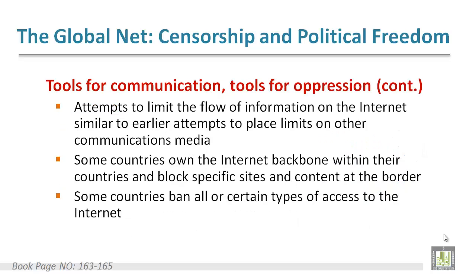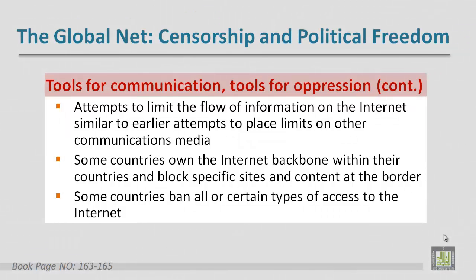During the revolution, the government temporarily shut down the internet and all cell phone services entirely. In addition, some countries attempt to limit the flow of information on the internet, similar to earlier attempts to place limits on other communications media. Some countries control the internet backbone within their countries and block specific sites and content at the border. Some countries ban all or certain types of access to the internet. For example, the government of Iran at various times blocked websites such as Amazon, YouTube, Wikipedia, etc.